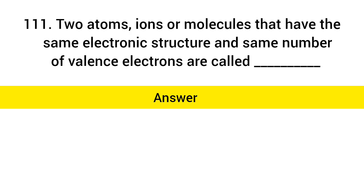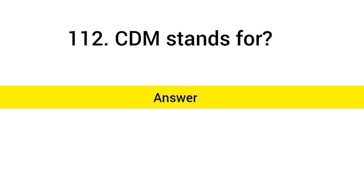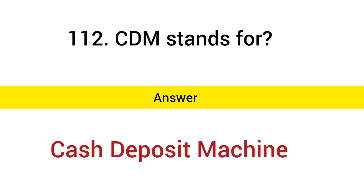Two atoms, ions or molecules that have the same electronic structure and same number of valence electrons are called? Answer: Iso-electronic. CDM stands for? Answer: Cash Deposit Machine.